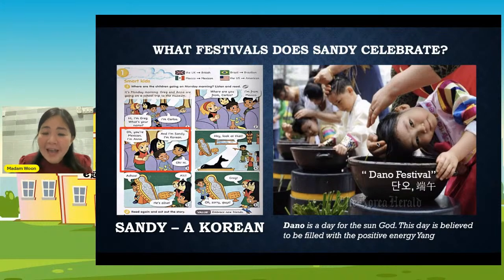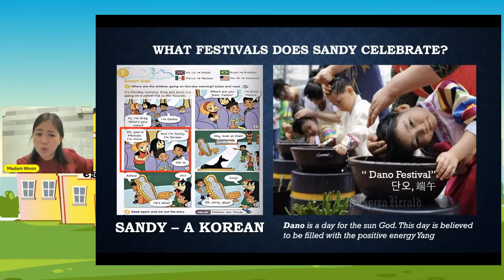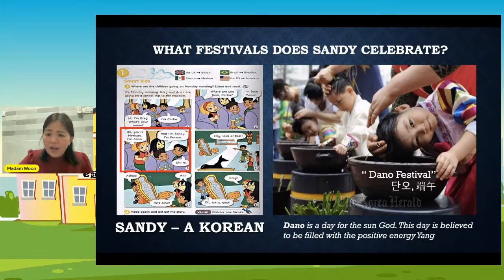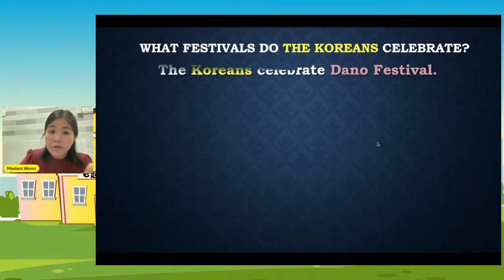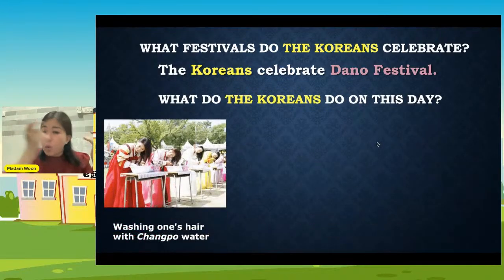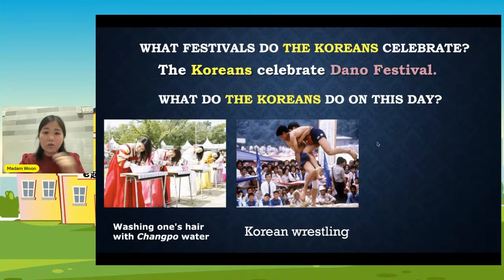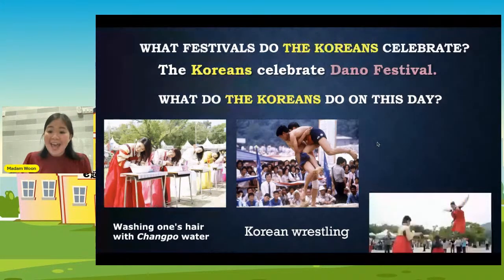The Korean Dano Festival has the same Chinese characters as our Dragon Boat Festival. The Dano Festival is actually a day that they believe is filled with a lot of positivity. What do they do? The Koreans celebrate Dano Festival — they will wash their hair under the sun with Changpo water. They also have Korean wrestling — WWE but Korean style! And they jump on the seesaw — a jumping game on the seesaw.